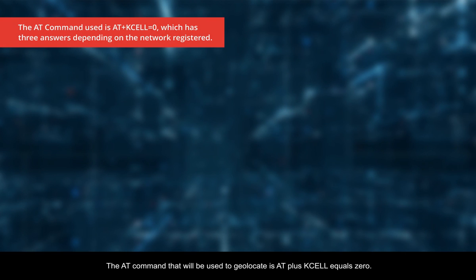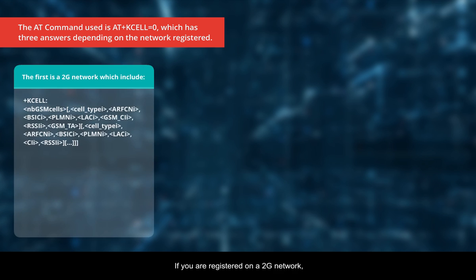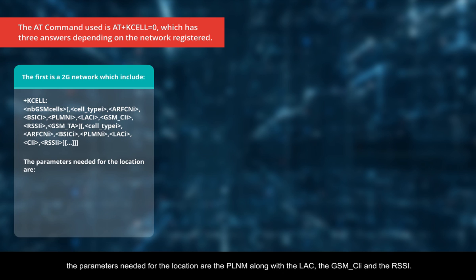The AT command that will be used to geolocate is AT+KCEL=0. The command has three answers depending on the network on which you are registered. If you are registered on a 2G network, the parameters needed for the location are the PLMN, along with the LAC, the GSM CLI, and the RSSI.